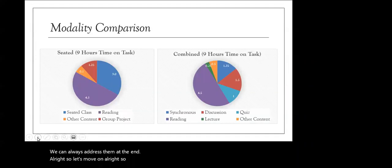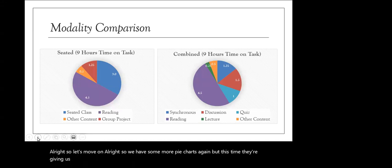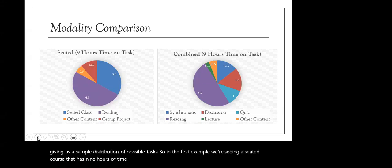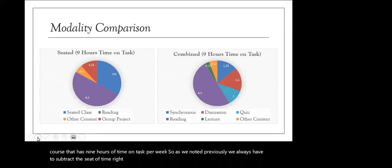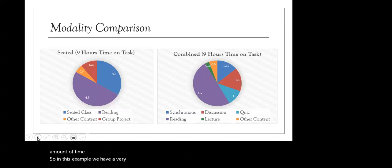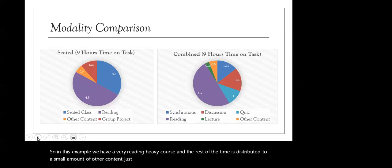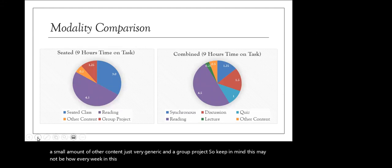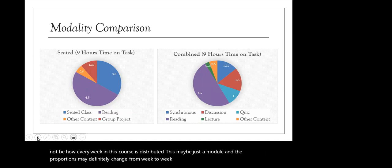Here are some more pie charts giving a sample distribution of possible tasks. In the first example, we're seeing a seated course with nine hours of time on task per week. We always have to subtract the seated time right away, then distribute tasks for the remaining time. In this example, we have a very reading-heavy course. The rest of the time is distributed to a small amount of other content and a group project. Keep in mind this may not be how every week in the course is distributed — it may be just one module, and proportions may definitely change from week to week.